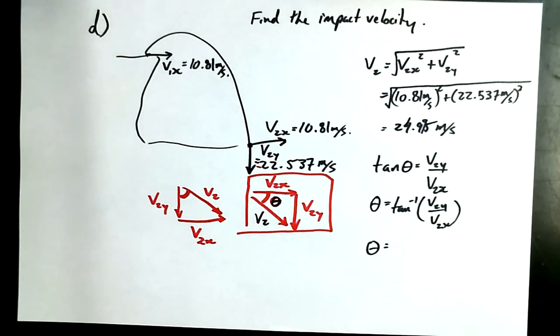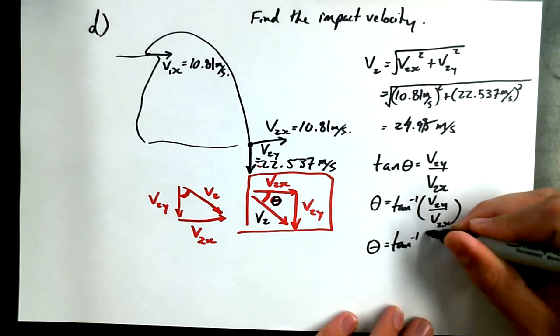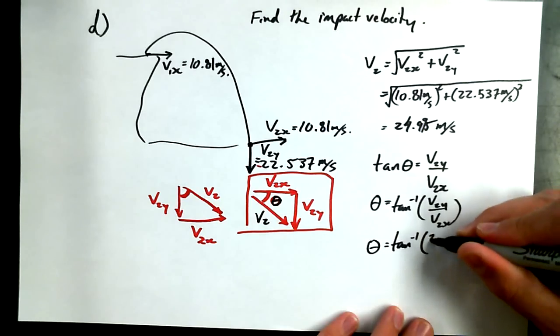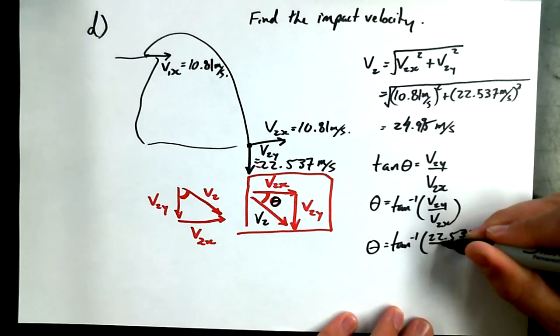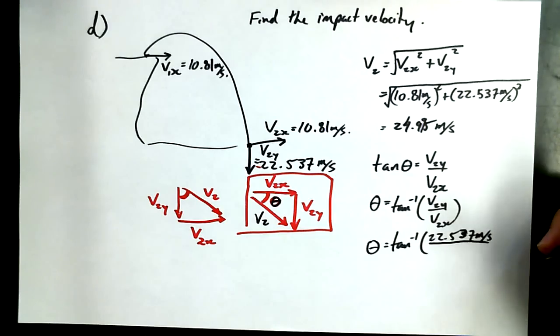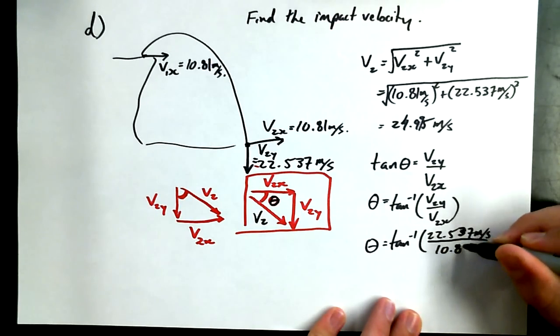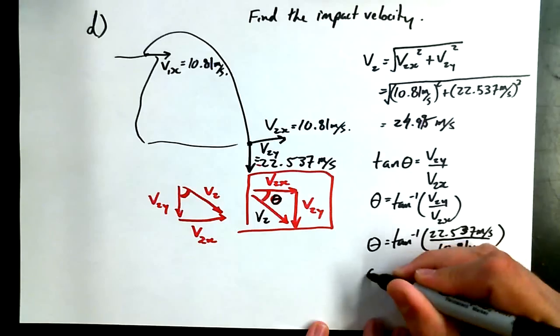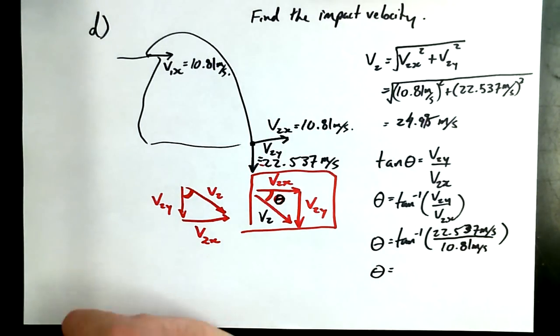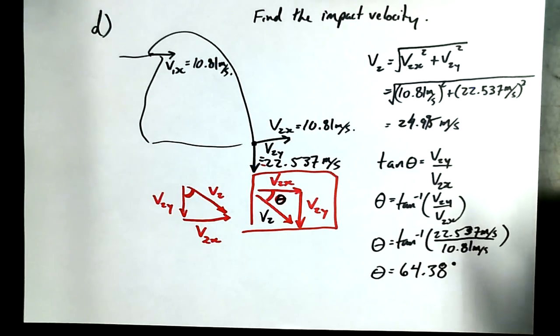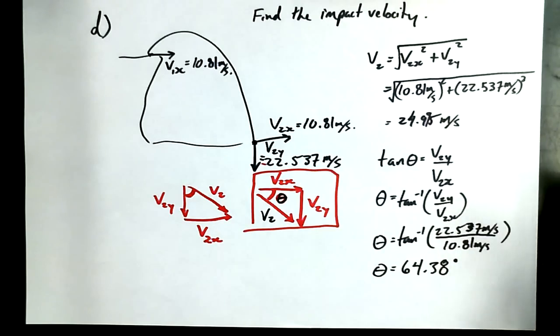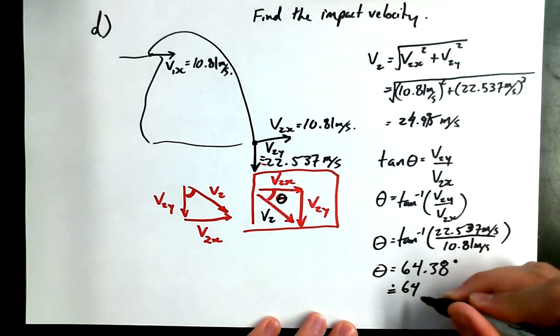I'll write it out. I'll write out the numbers then, just to make sure. V2Y, 22.537. And for goodness sake, use the positive values, because you're just solving a geometry problem. Don't sub in the negative values for V2Y and V2X here, or for V2Y rather, in just this case. Save yourself a headache. 64.37? 64.38? Yeah, you may have your calculator on radians. We'll look into it. It's okay. All right, so 64.38, or approximately 64.4 degrees.